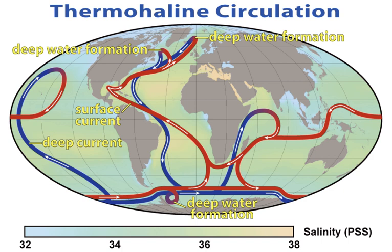Humans first acquired knowledge of the waves and currents of the seas and oceans in prehistoric times. Observations on tides were recorded by Aristotle and Strabo. Early exploration of the oceans was primarily for cartography and mainly limited to its surfaces and the animals that fishermen brought up in nets, though depth soundings by lead line were taken.